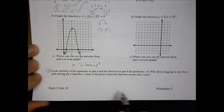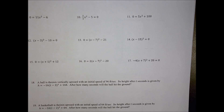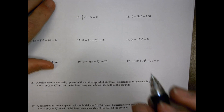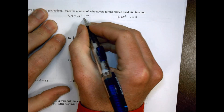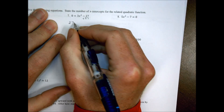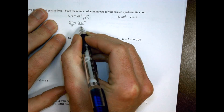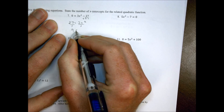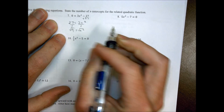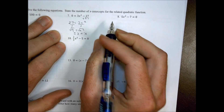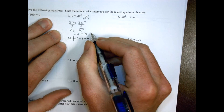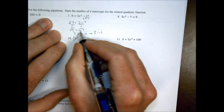Problem 5 just asks you to explain in your own words what's happening. Now looking at the back side, we'll do some odd-numbered solutions. For number 7: add 27 to both sides — 27 equals 3x squared. Divide both sides by 3 — 9 equals x squared. Take the square root of both sides — the square root of 9 is plus or minus 3, so x equals plus or minus 3. There are going to be two intercepts.